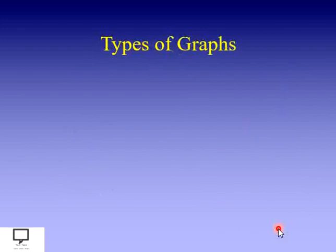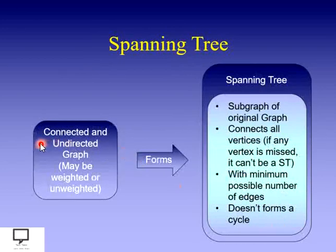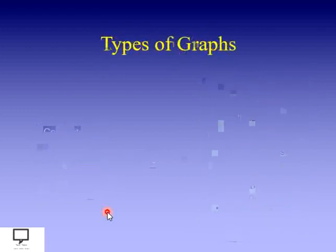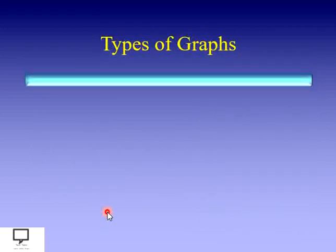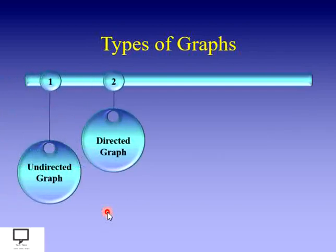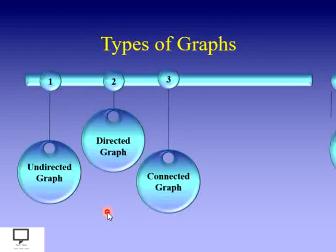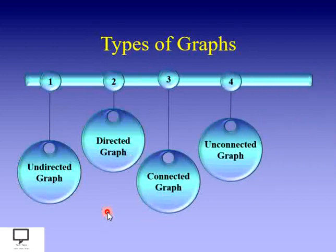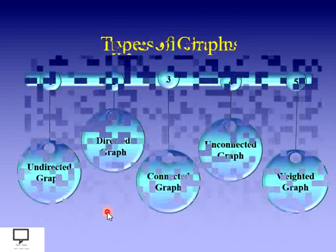As we have seen, we should take the input as a connected and undirected graph that may be weighted or unweighted. To know more about these different types of graphs, let's move to the next slide, where I will cover different types: undirected graph, directed graph, connected graph, unconnected graph, and weighted graph.